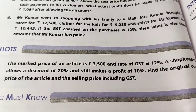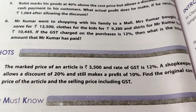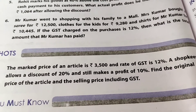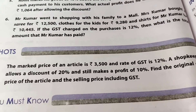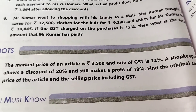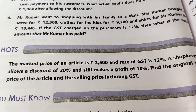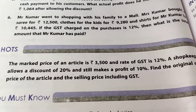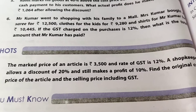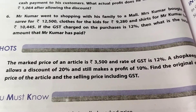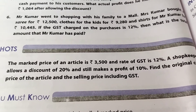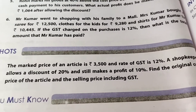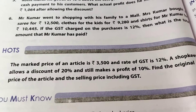Given: mark price is 3500 rupees, GST is 12 percent, discount percent is 20, and profit is 10 percent. First we have to find the selling price of the article. Note that GST is applied on the selling price, not on the mark price. So first we will find the selling price, and after that we will find the cost price.